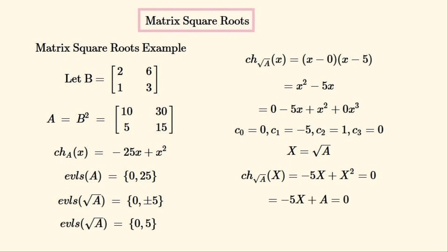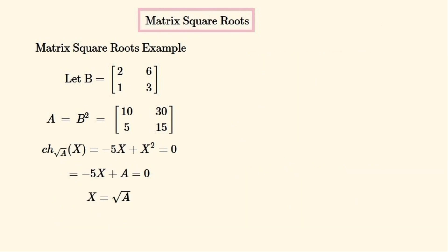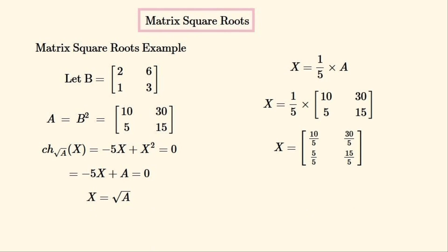According to the Cayley-Hamilton theorem, the characteristic polynomial of a matrix equals zero when evaluated for its own matrix. We can substitute A in for X² here, and this equation can then be solved for X — it looks like a very simple equation. After cleaning up and evaluating, we substitute the matrix A in and use scalar multiplication to evaluate the expression, giving us a matrix as the square root which is equal to matrix B.